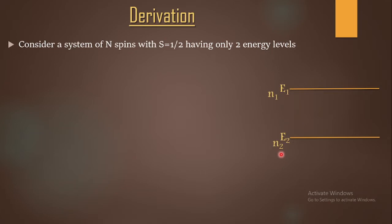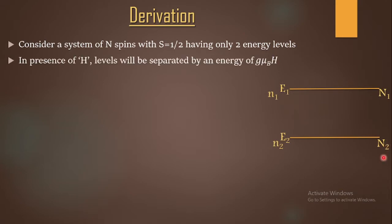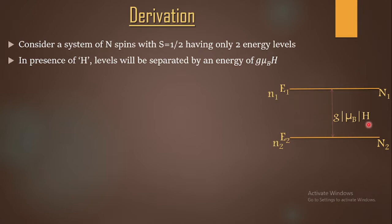Let n1 be the population of the upper level before equilibrium and n2 be the population of the lower level before equilibrium. After equilibrium, let capital N1 be the equilibrium population of the upper level and capital N2 be the equilibrium population of the lower energy level. When a magnetic field H is applied, the levels are separated by an energy equal to g·μ_B·H.